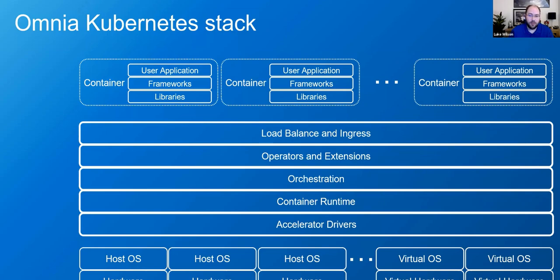We install the orchestration layer directly from Google through the Kubernetes repositories, then all the other pieces necessary to make Kubernetes useful, including different operators and extensions. We install Helm 3, the Operator Lifecycle Manager — which was part of OpenShift but has now been given to the Cloud Native Computing Foundation as an open project. We deploy services using those frameworks including the MPI operator, the Spark operator, and a host of load balancer and ingress services so you can provide IP addresses to persistent services.